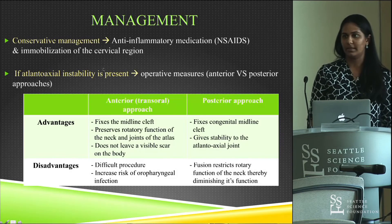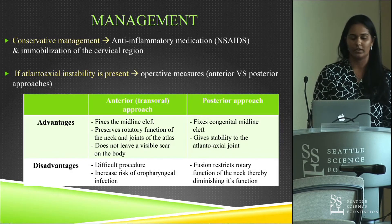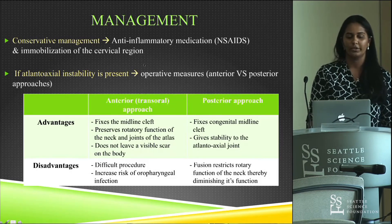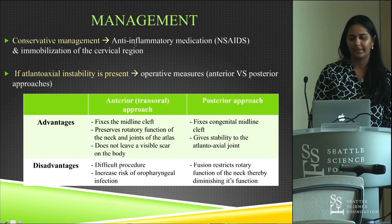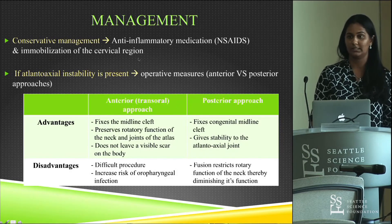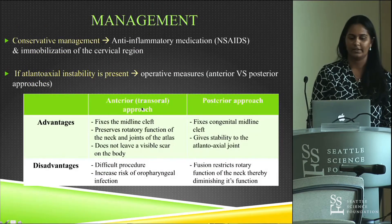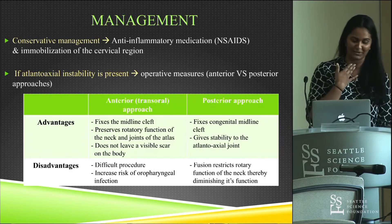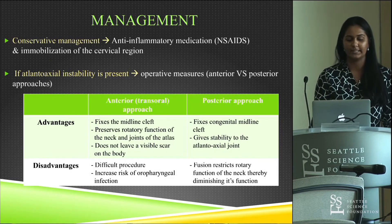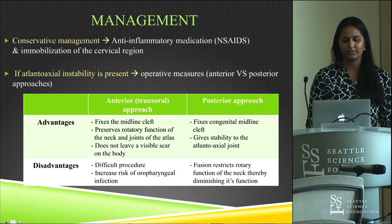Most patients are asymptomatic and require no treatment. If the patient has chronic cervical pain, anti-inflammatory medications such as NSAIDs or cervical immobilization with a collar or halo ring can be used. Most importantly, atlantoaxial instability must be assessed, as this requires a 3D CT reconstruction and potentially operative intervention. Instability means minor trauma could displace the atlas, cause dislocation at the atlantoaxial level, and produce significant stenosis of the spinal canal, which is life-threatening.